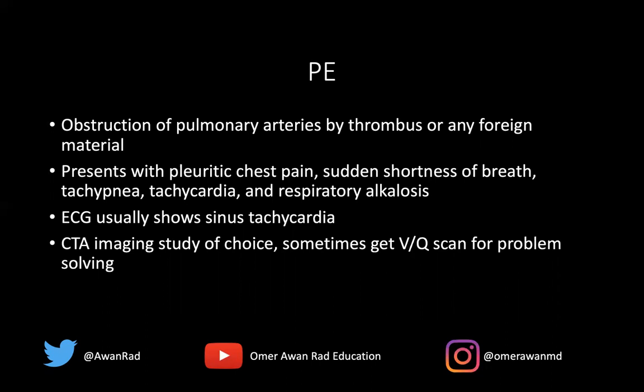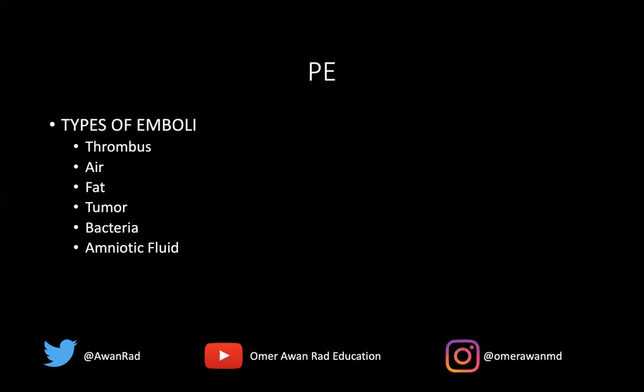A major risk factor for PE is having a DVT. We treat PE with anticoagulants, and if the patient can't tolerate anticoagulation, we can place an IVC filter into the vena cava to help prevent propagation of a DVT into the pulmonary vasculature. There are different types of emboli: thrombus is most common; air emboli from caisson's disease or central line placement; fat emboli from liposuction or long bone fractures; tumor; bacteria from endocarditis; or amniotic fluid in a postpartum patient.